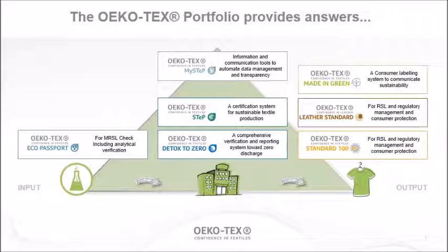I want to give you a short overview of the updated Ökotex portfolio. Ökotex covers the whole textile and textile-related industries such as accessory production, as well as the later processes: from chemical inputs with EcoPassport, to production itself with STEP — the Sustainable Textile Production — and DETOX 2.0, which is a comprehensive verification with a status report for companies that signed the DETOX campaign. We also have the MySTEP database for managing the supply chain, as well as product outputs with Standard 100 by Ökotex, Made in Green, and Leather Standard by Ökotex.